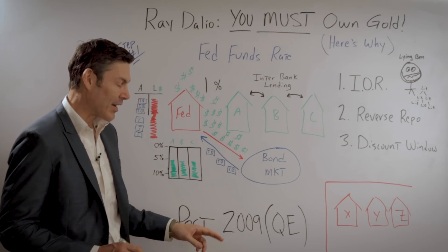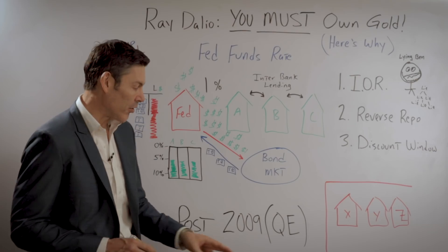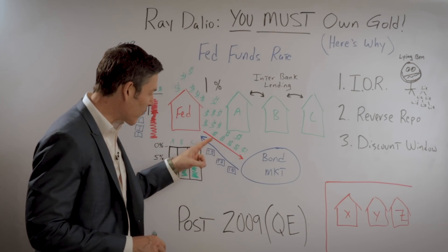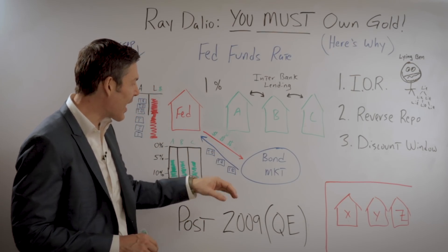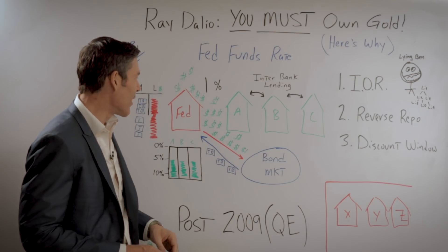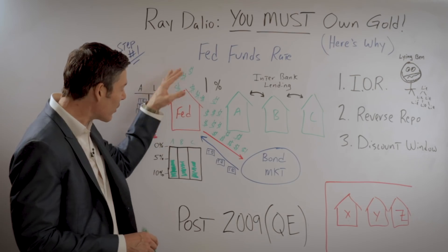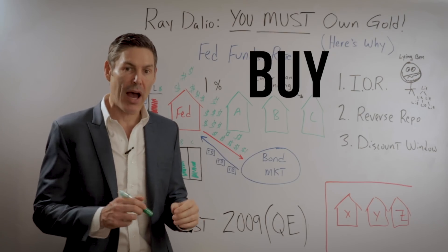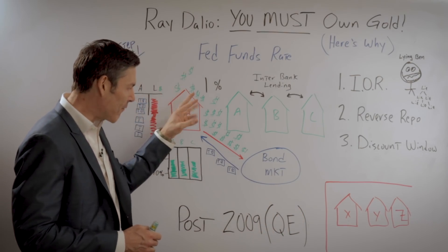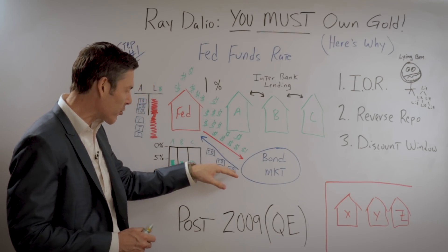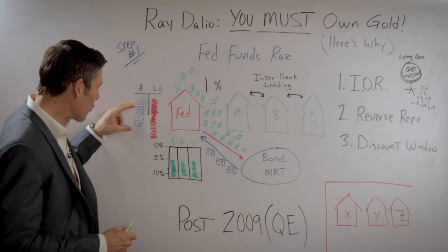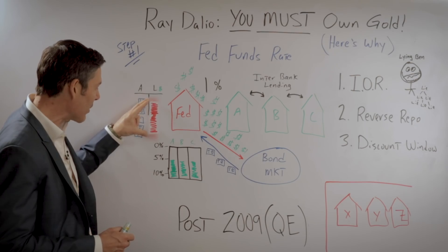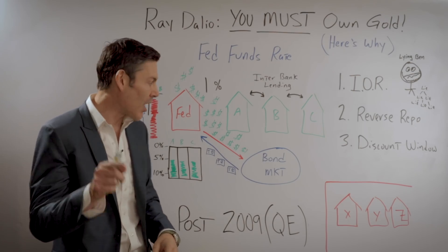Post-2009, everything changed, and it all starts with quantitative easing. The first big difference was the Fed went from printing a few dollars to printing countless dollar bill signs — literally raining down from the sky. They did this in order to buy longer-term treasuries. With all that funny money they printed, they bought those longer-term treasuries from the bond market. That increased the size of their balance sheet and increased the amount of liabilities — those IOUs — that they owe.